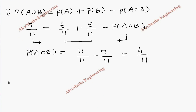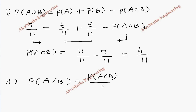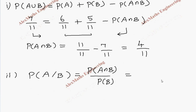In subdivision 2, they want P(A|B). The formula is P(A|B) = P(A∩B) / P(B). Using P(A∩B) = 4/11 from the previous subdivision and P(B) = 5/11, after cancelling we get 4/5.